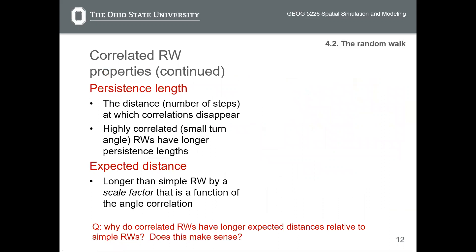There is also something called persistence length — the distance, or number of steps, at which correlation disappears. We learned that correlation will eventually fade when the time is long enough. Highly correlated random walks have longer persistence length, and the expected distance is longer than simple random walk by a scale factor that is a function of the angle correlation.